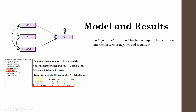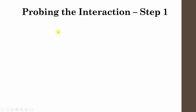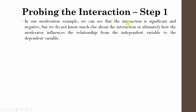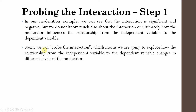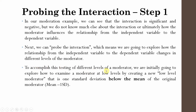This means there is a negative moderating role of role ambiguity in the relationship between CC and OP. The next step is probing the interaction. Although the interaction is significant and negative, we do not know much about how the moderator ultimately influences the relationship between the independent variable and the dependent variable. Probing the interaction means exploring how that relationship changes at different levels of the moderator.